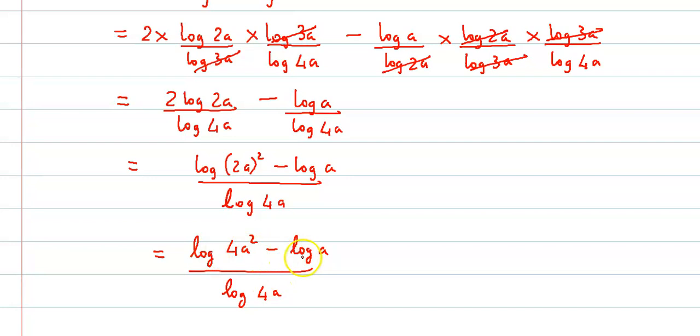We can combine these 2 logs and convert to division. So this becomes log of 4a squared. This is log a minus log b, which becomes log of a upon b.